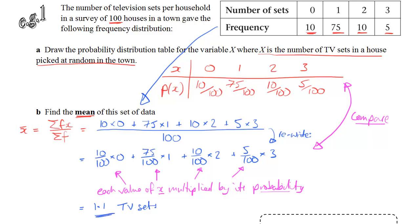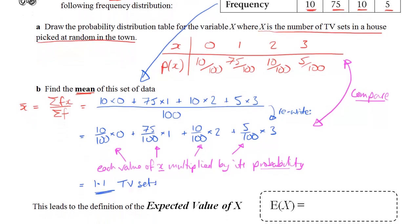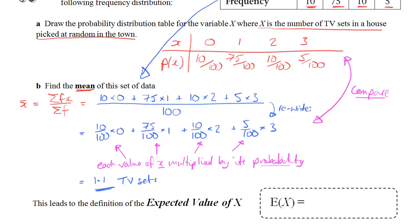Which in this case works out as 1.1 TV sets as the mean. However, if we look at it as a probability thing, that's how we would work out what we would expect to get. Based on the probabilities, we can come up with an expected value for a variable, which means the expected value of the mean. We can see from what we've just done that we can get that by multiplying each value by its probability, which gives us this formula.